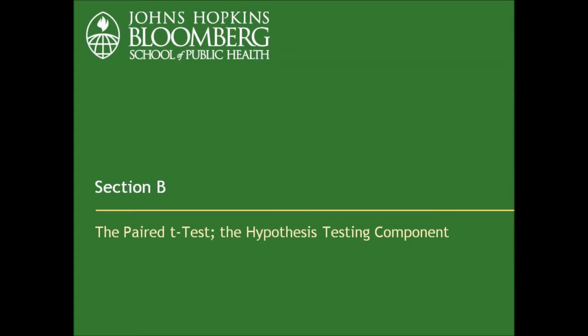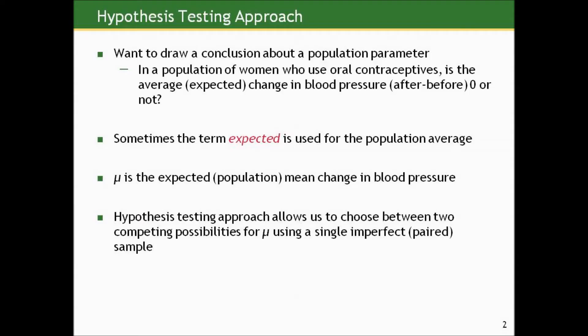In this section, we're going to pick up from the momentum of Section A and work on the paired t-test some more and talk about another component of it, the hypothesis testing component. Here's where we'll first define the idea of something that will permeate your life, whether in this course or outside of it, when you read research and talk with your colleagues — something called the p-value. Hopefully by the end of this series, we'll have demystified the Wizard of Oz-like aura about the p-value.